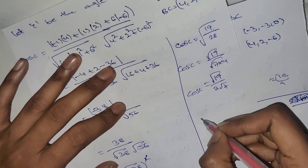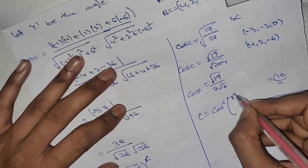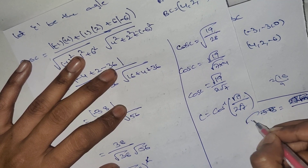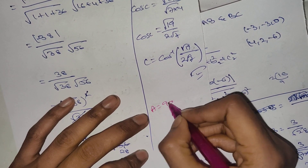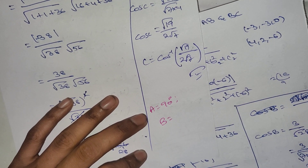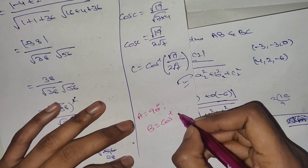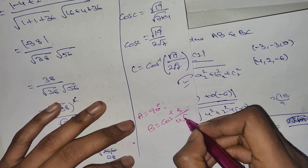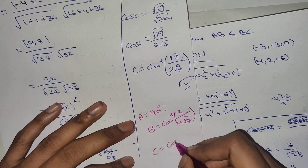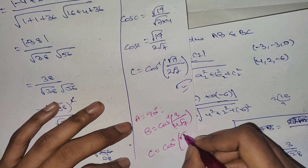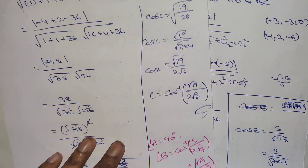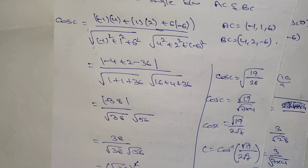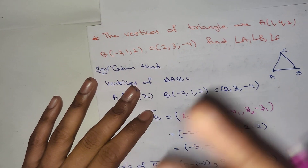So cos C equals cos inverse of root 19 by 2 root 7. Angle A, angle B, angle C are now found. This question involves direction cosines, direction ratios, and 3D geometry points.